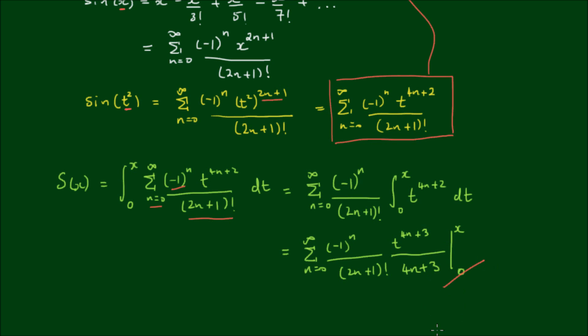So this lower bound of 0 goes to 0. So the result as a function of x is simply the sum from n equals 0 to infinity, of (-1)^n, of x^(4n+3), all over (2n+1) factorial, by 4n+3.